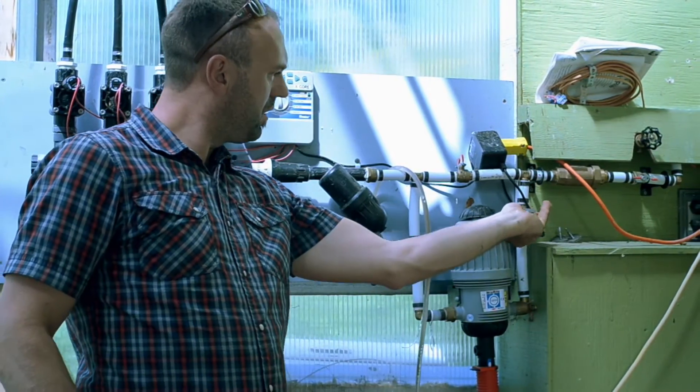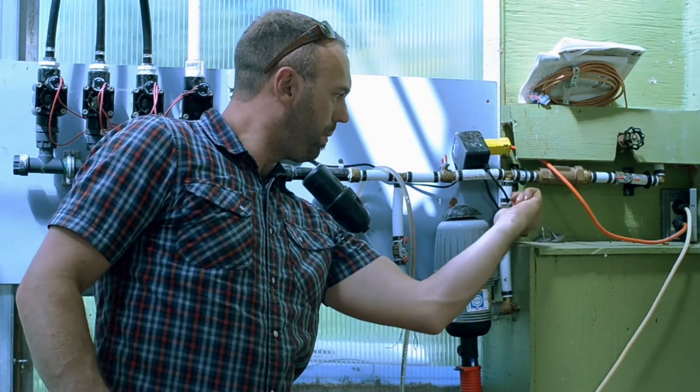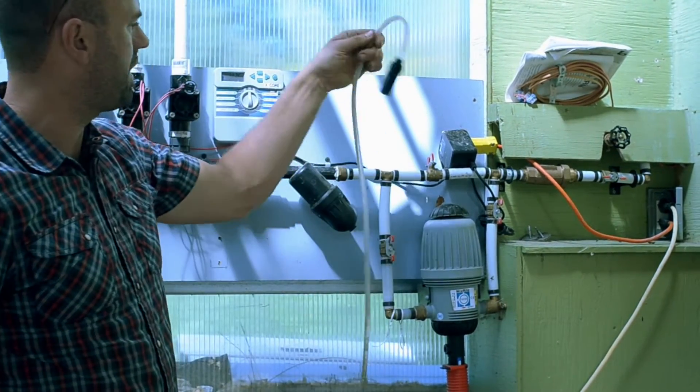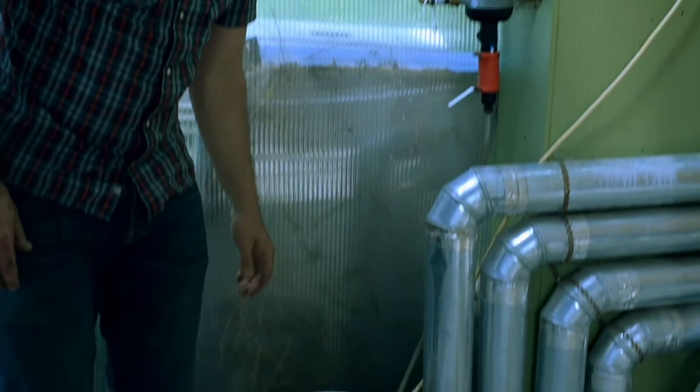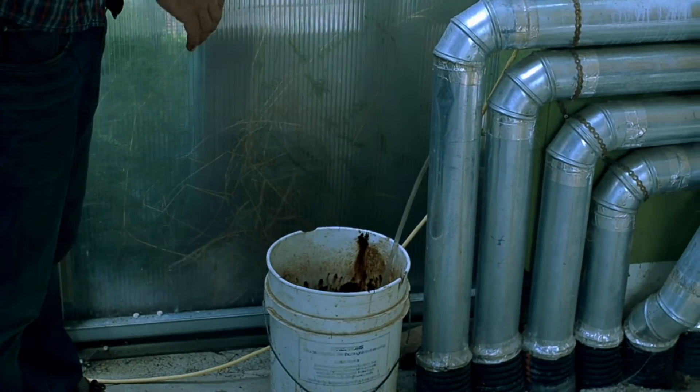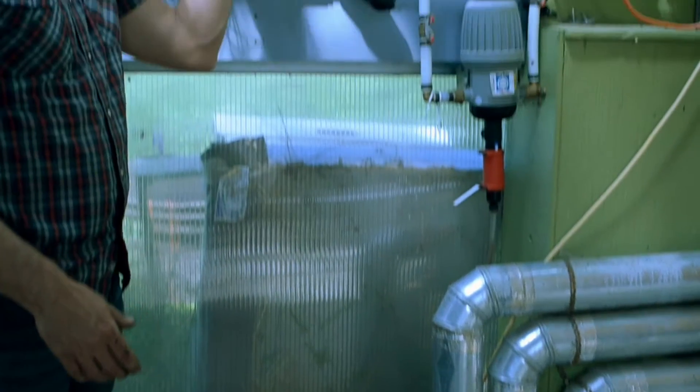open this up right here and then we take our suction hose, we dip it into the extract and then we turn on our irrigation.